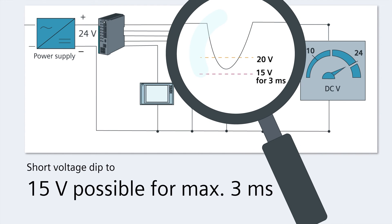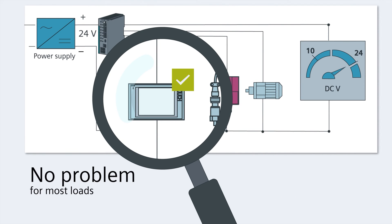The voltage can dip from 24 volts to 15 volts for a maximum of three milliseconds in the event of a short circuit. But this poses no problem for most loads.